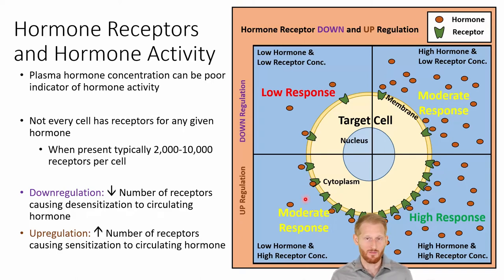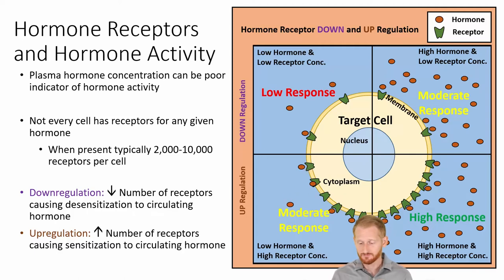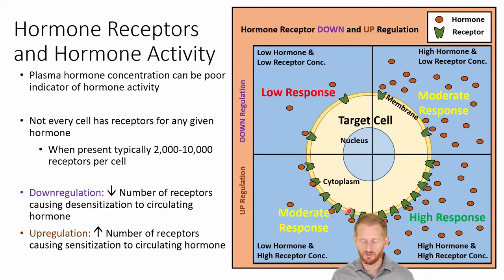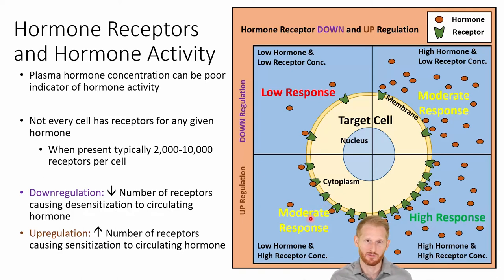The opposite way to get a moderate response is to have a high number of hormone receptors but not a lot of hormone floating around in the bloodstream. Each receptor won't always be bound to hormone, but the hormones floating around will very easily find a receptor and will typically always be bound to one. Again, you get a moderate amount of hormone activity in this situation.